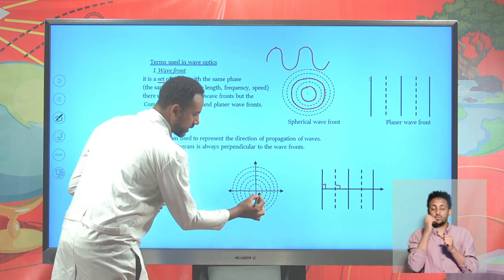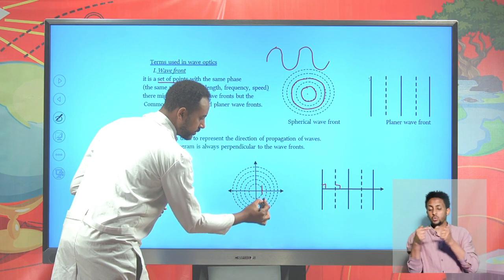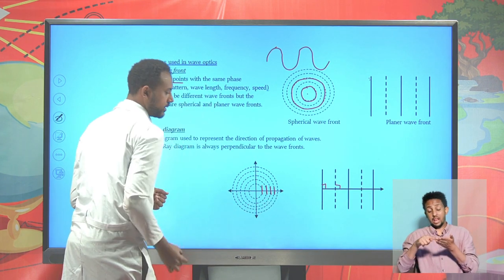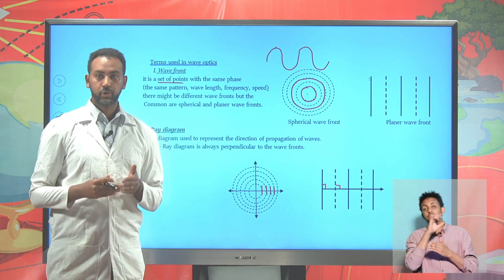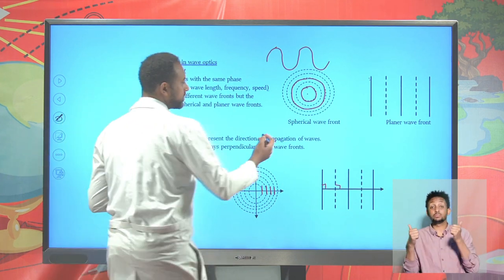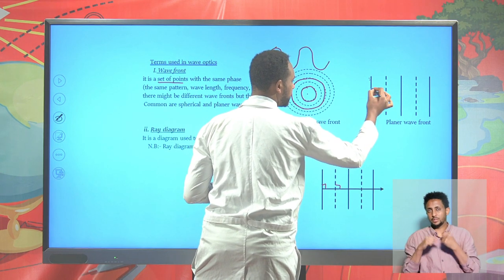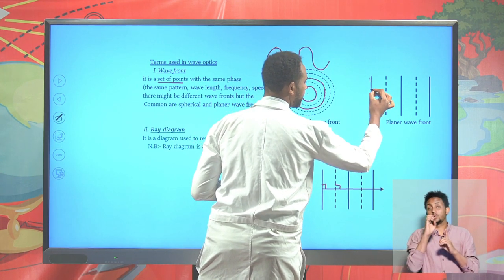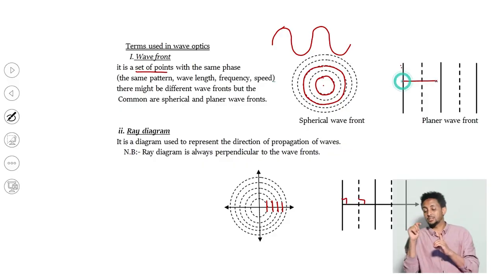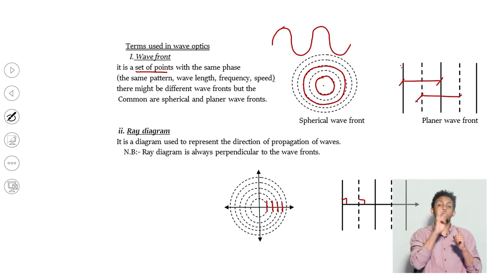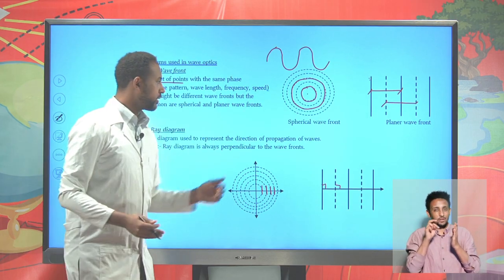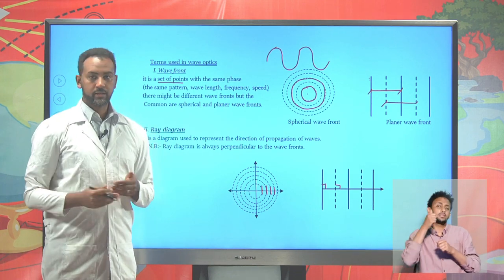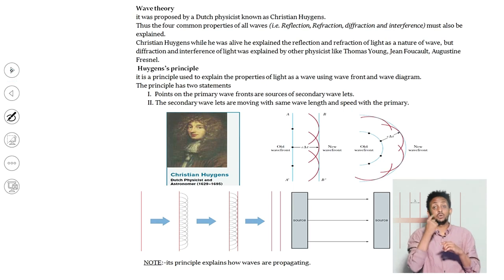For a spherical wavefront, at the point of tangency, the tangent line and the ray are perpendicular to each other. Generally, wavefronts and ray diagrams are mutually perpendicular to one another. The distance between two consecutive wavefronts — from crest to crest or trough to trough — is known as the wavelength, which is the minimum distance between two corresponding points of consecutive waves.